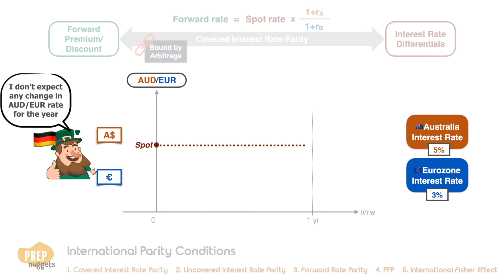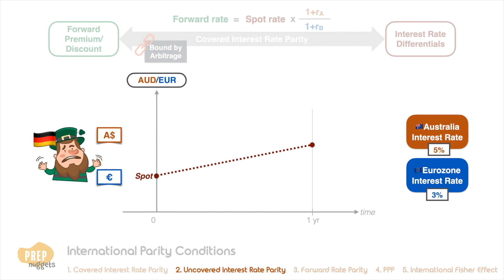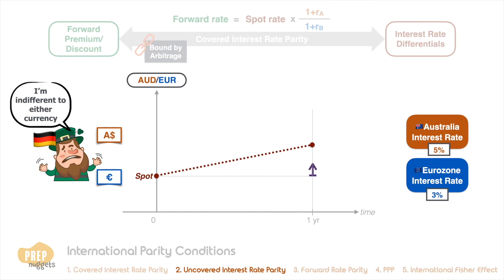The investor would prefer to buy AUD and sell euros if he does not expect any change in the future exchange rate. This brings down the spot rate until there is sufficient difference between the spot rate and the expected change in spot rate over the period that he would be indifferent to investing in either currency. Mathematically, this is the point where the expected change in spot rate equals the difference between the interest rates of the foreign and domestic currencies.